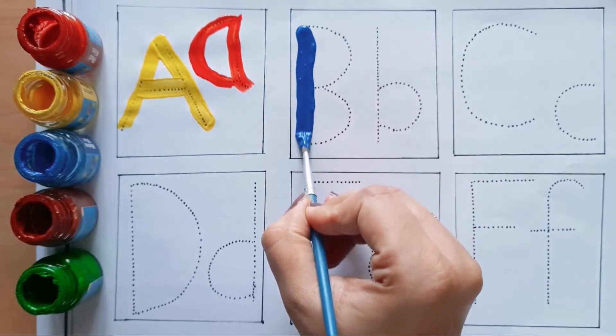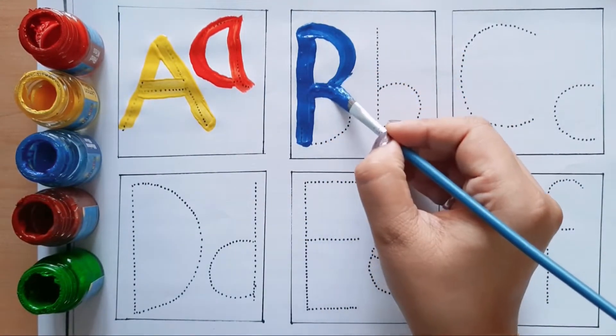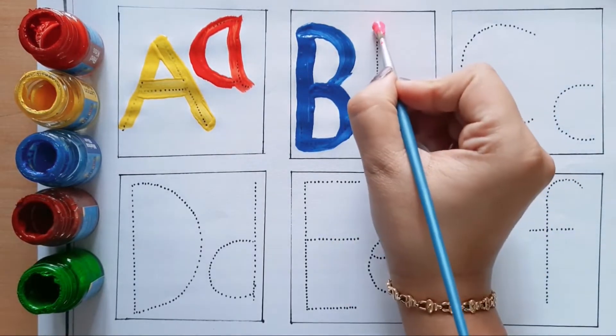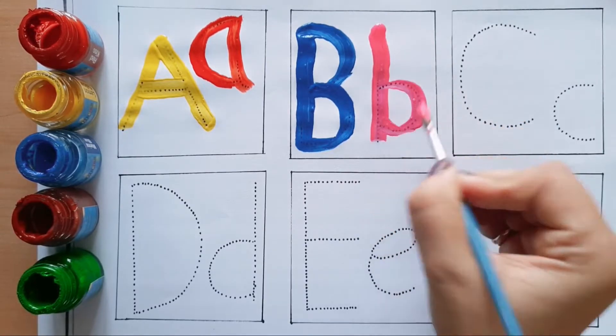Capital B, blue color. B for Banana - Banana means Kela. Small b, pink color. B for Boat - Boat means Naav.